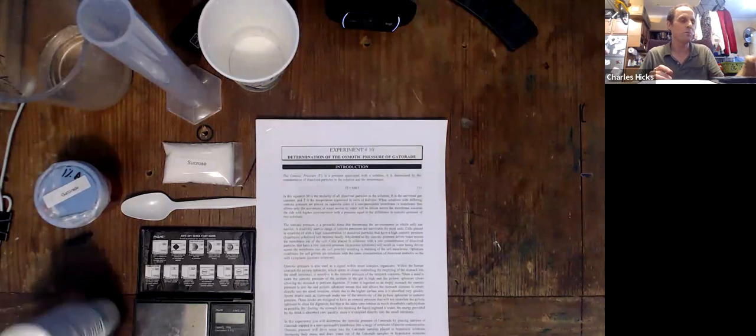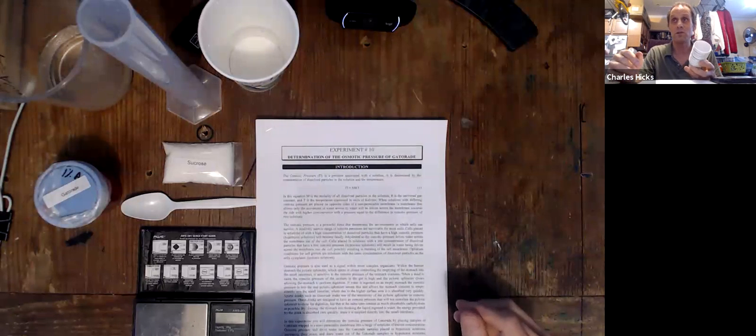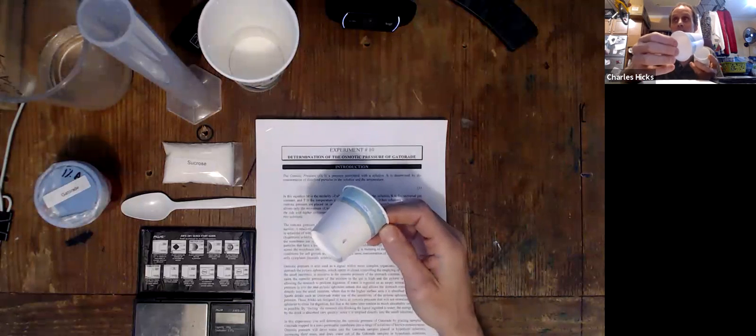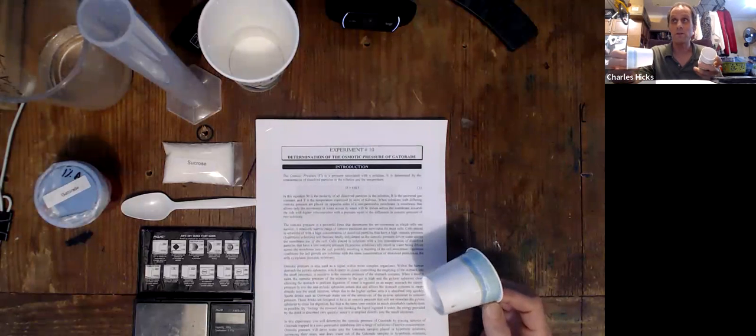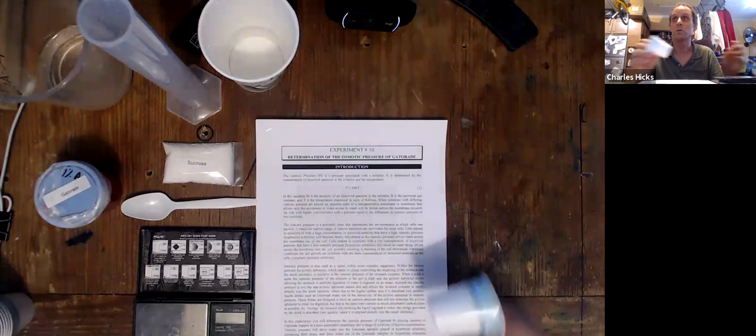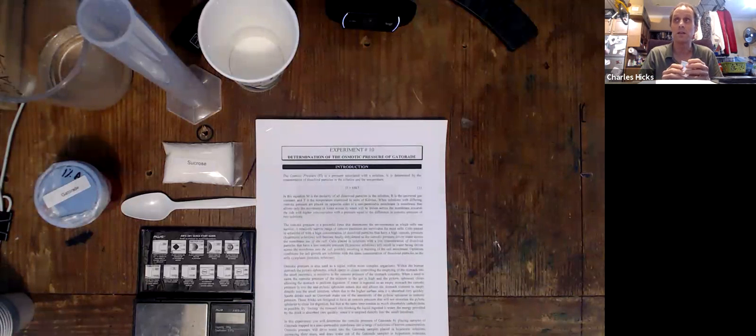In the next part of the experiment, we have to prepare 10 sucrose solutions that have different percentages, and we're going to do that inside of these Dixie cups. I'm only going to demonstrate one of them, but the procedure is the same for all 10 solutions. We have to prepare 10 solutions that are between 1 and 10% sucrose.